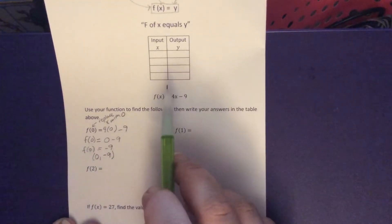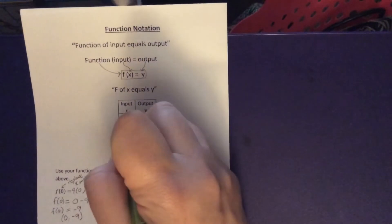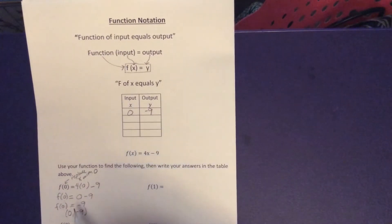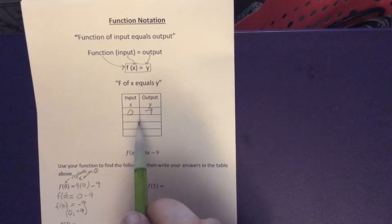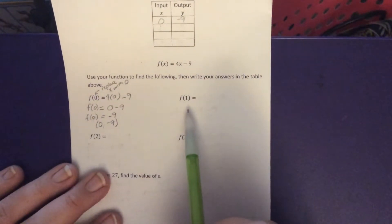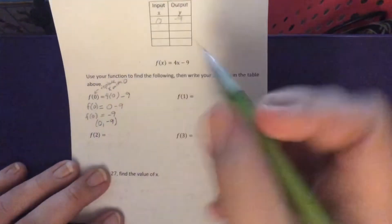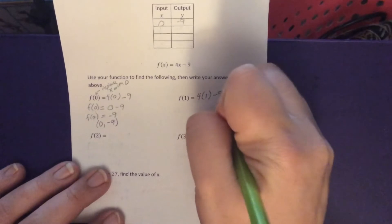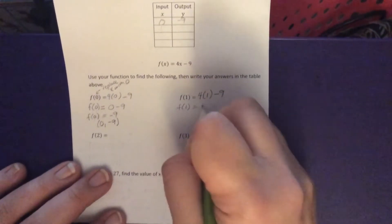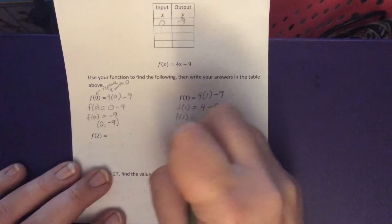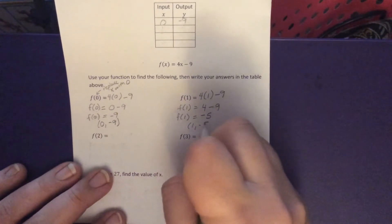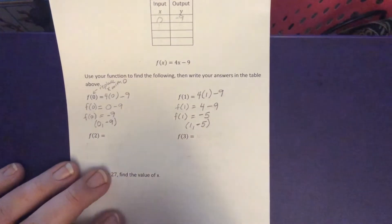That's also going to help me to fill in my input output table up here. I know that when my input is 0, my output is negative 9. So I've got one ordered pair that I have used substitution in my function, figured out the output and now put them into my tables. Now we're going to do the same thing with the other inputs that were given. So over here I have f of 1 which means my next input is 1. So I'm going to evaluate. I'm going to continue bringing along that notation. f of 1 equals 4 times 1 which is 4 minus 9. f of 1 equals 4 minus 9 which is negative 5. So if I were to write my ordered pair it would be 1 comma negative 5. Input of 1, output of negative 5 and I can add that one into my table as well.